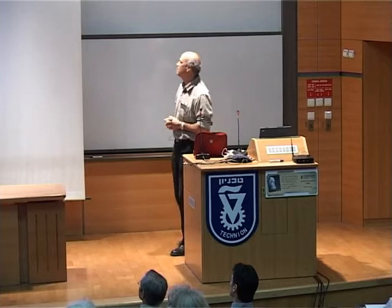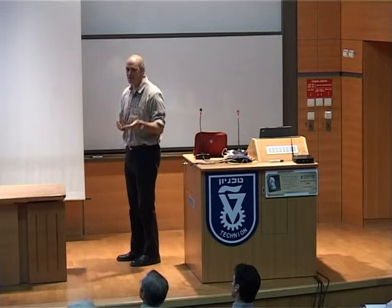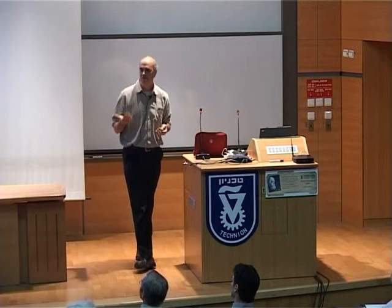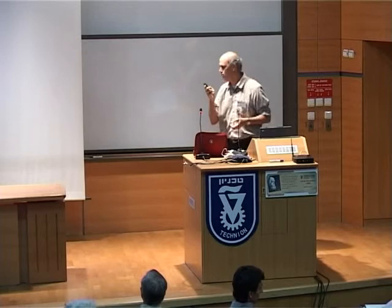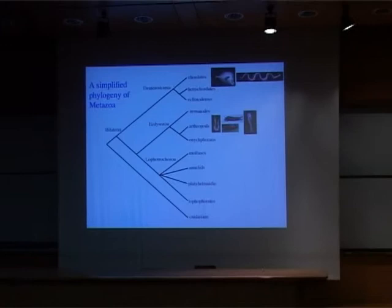If we look at metazoans, and more specifically the bilaterians, we see that segmentation appears in several different branches of the tree. We see chordates, which Rami just talked about, and chordates have very obvious segmentation. This is most obvious if we look at the skeleton, such as in the snake, but the muscles are segmented, the nervous system is also segmented, and the respiratory system, at least primitively, is segmented. So chordates are very clearly a segmented phylum.